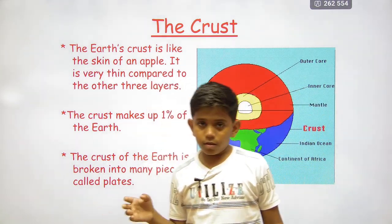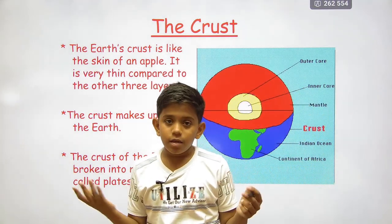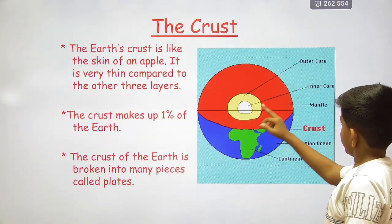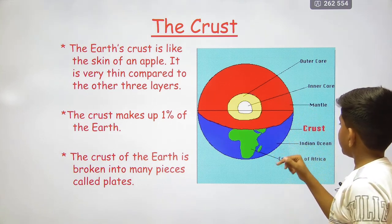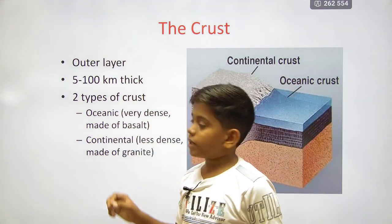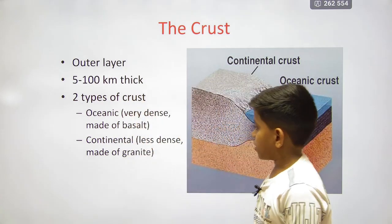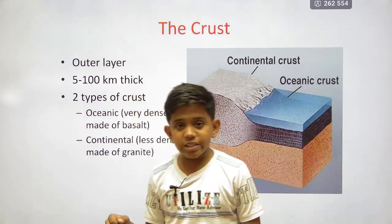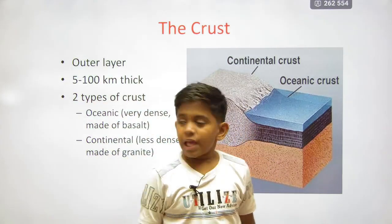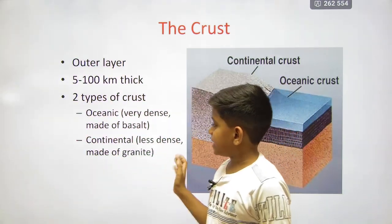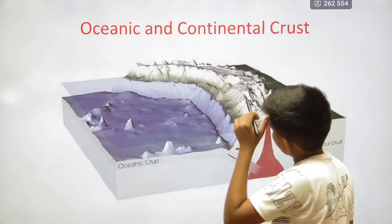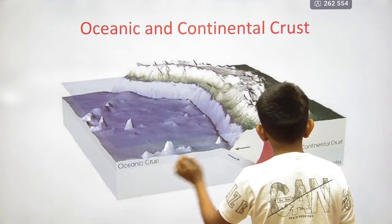The earth is divided into many tectonic plates. The outer layer — the crust — is five to one hundred kilometers thick. There are two types of crust: oceanic crust, which is very dense and made up of basalt, and continental crust, which is less dense and made of granite and forms the land.